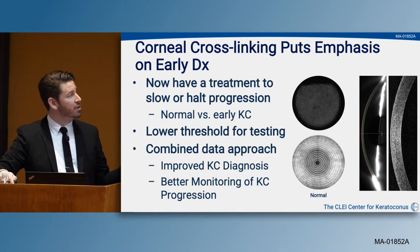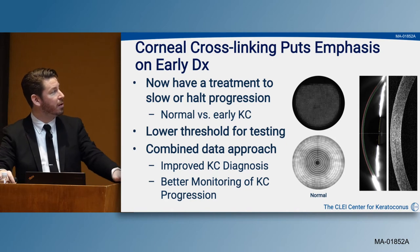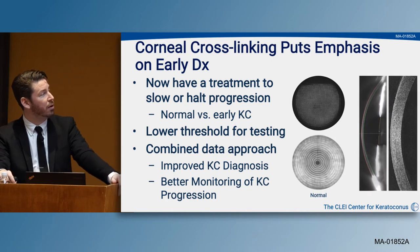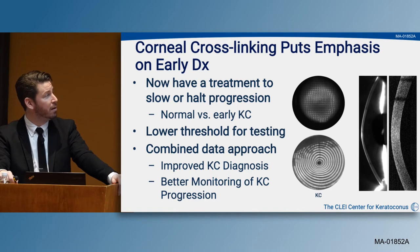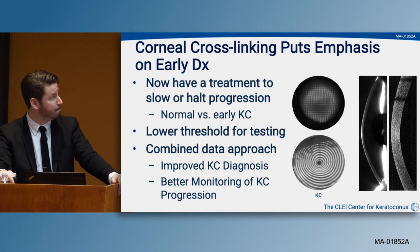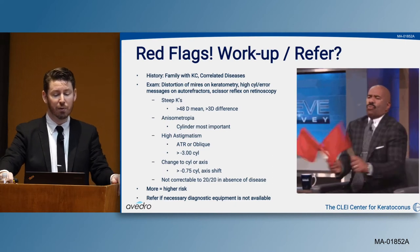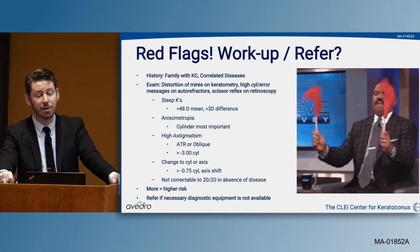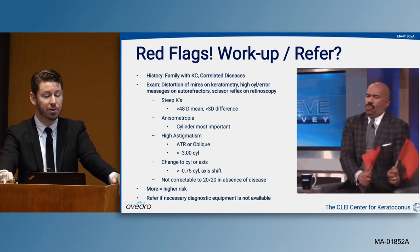We can see the irregularities shown in the Hartmann-Shack, as well as the Placido disc, the Scheimpflug, and the OCT. The red flags we should look for when deciding to work up or refer a patient include family history of keratoconus, which warrants at minimum a corneal topography and evaluation for correlated conditions such as atopic disease.